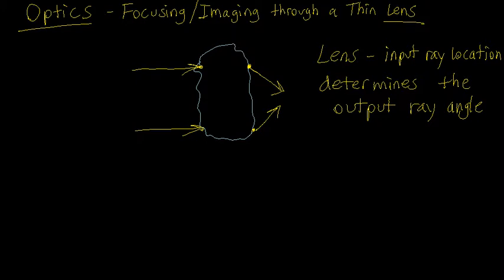We're going to start—oh, yes, what is thin? I should probably explain that. Thin, in this case, means that the input ray location is the same as the output ray location for the lens. It means that the lens itself is thin enough so that the ray doesn't really undergo any traveling distance, so that the light bends inside the lens and changes the output location substantially.